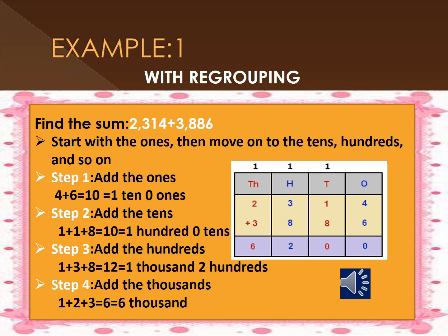Step 3 — add the hundreds: 1 plus 3 plus 8 gives you 12. 2 is kept in the hundreds place and 1 is carried to the thousands place. Step 4 — add the thousands: 1 plus 2 plus 3 gives you 6. Finally, you get the answer 6,200.